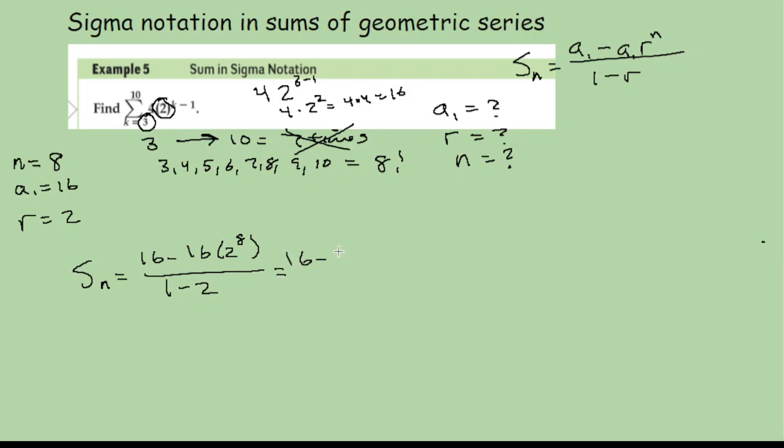So it's 16 minus 16 times, well, 2 to the eighth power, I want to say is 256, but I'm not 100% sure. So let's figure that out. 2 to the eighth is 256, yeah. So 256 all over negative 1. And so that's going to be 16 minus, so times 16, 256. What's going on with my calculator here? It's like not being very cooperative. 4,096 all over negative 1.